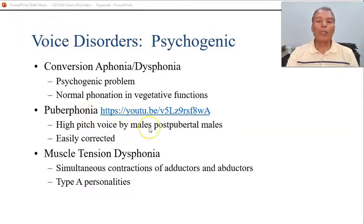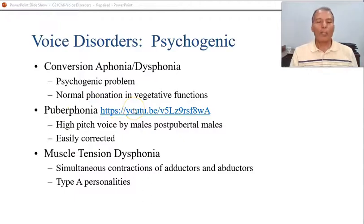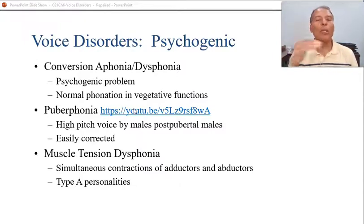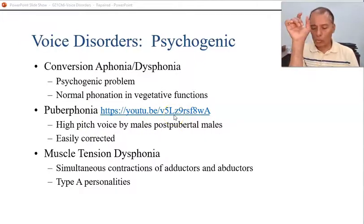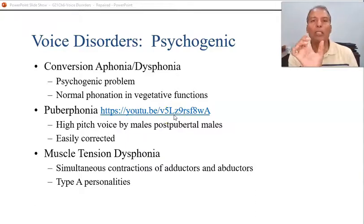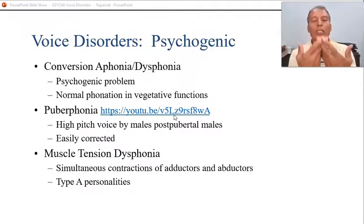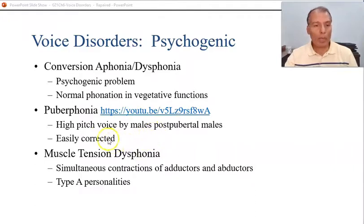Puberthonia is another psychogenic example, particularly affecting young males transitioning into puberty. The person's physical body is mature and complete, yet the voice has not changed — he continues speaking in the same boy's pitch. This causes problems in school, socially, and psychologically. Treatment involves exercises, and once the person produces the lower voice even once, it is usually corrected within just a couple of therapy sessions.